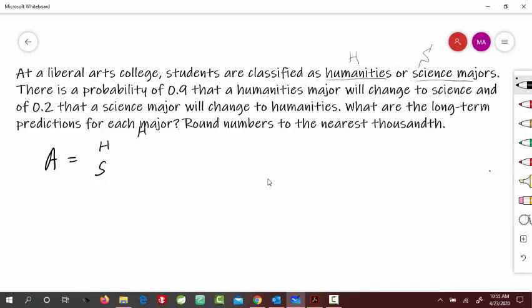So humanities, science, and humanities to science majors, the change is 0.9, our transition, so 0.9, and then science to humanities is 0.2.